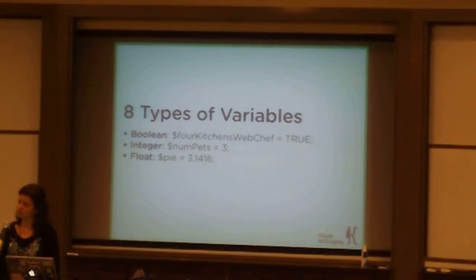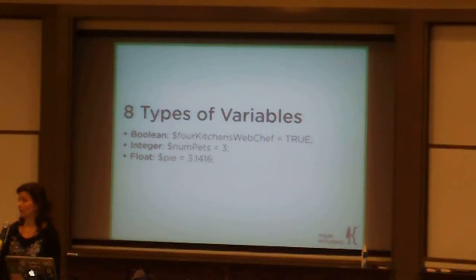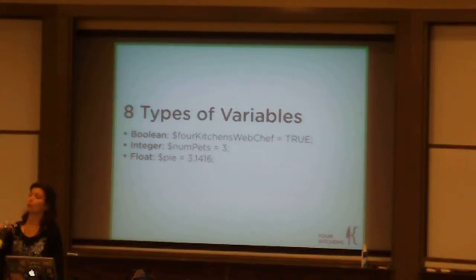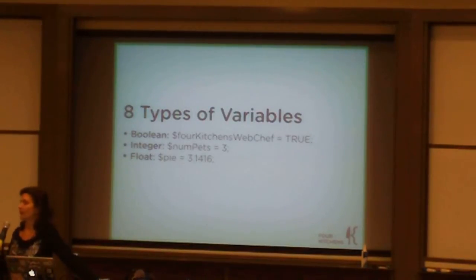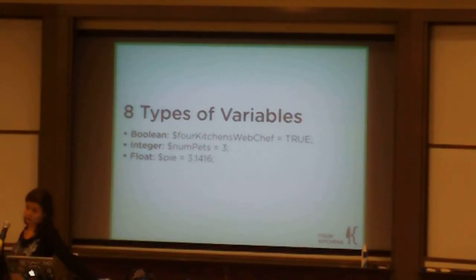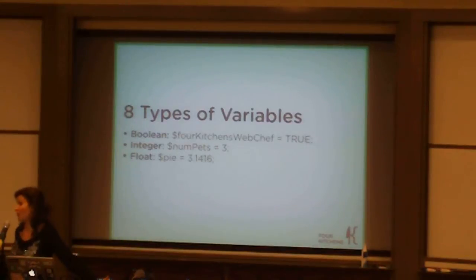A student asked: how do you tell the difference between using one for the true value of a boolean and the actual number one? The answer is: PHP doesn't distinguish — it depends on how you use it later. If you're saving data in a table like 'did this person attend, true or false' and you use one and zero, it will treat it as true or false. If you use it later as an integer, it will use it as an integer. It's very flexible that way.